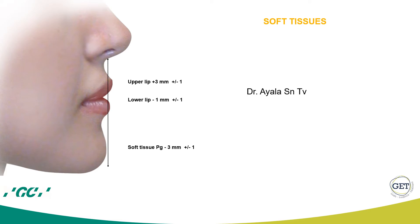Dr. Jorg Ayala has proposed another line, running according to the true vertical through the subnasale point, with the patient in natural head posture. According to Dr. Jorg Ayala, the upper lip should be about 3 mm in front of this line and the lower lip 1 mm behind or at the level of this line. This line can be useful, but it also has a limitation: the subnasale point is very easy to mark and very reproducible in case of a closed nasolabial angle. In case of an open nasolabial angle with a flat upper lip and a nose pointing upwards, it may be very complicated to find the subnasale and can be not very reproducible.